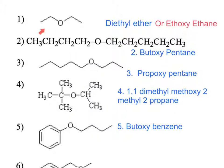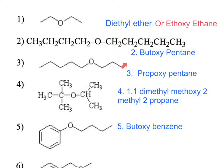Here we count one, two, three, four carbons on one side and one, two, three, four, five on the other side — this will be our parent chain of pentane. The four-carbon group is a butyl group; drop the -yl, add -oxy, so this is butoxypentane. Another example has a five-carbon parent chain of pentane and a propyl group, giving us propoxypentane.